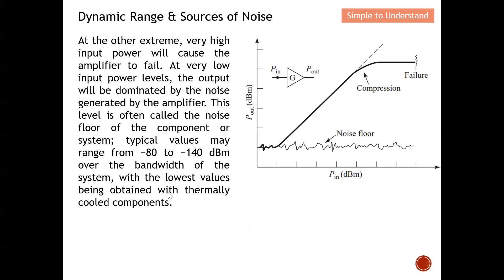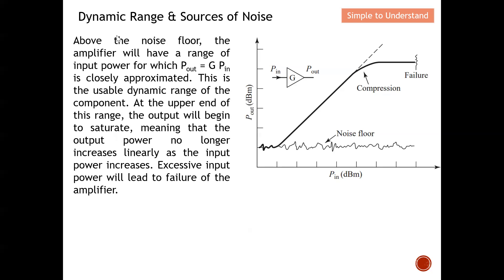Above the noise floor, the amplifier has a range of input power over which behavior is closely linear — this is the usable dynamic range. At the upper end of this range, the output becomes saturated, meaning output power no longer increases linearly as input power increases. Excessive input power will lead to failure of the amplifier.